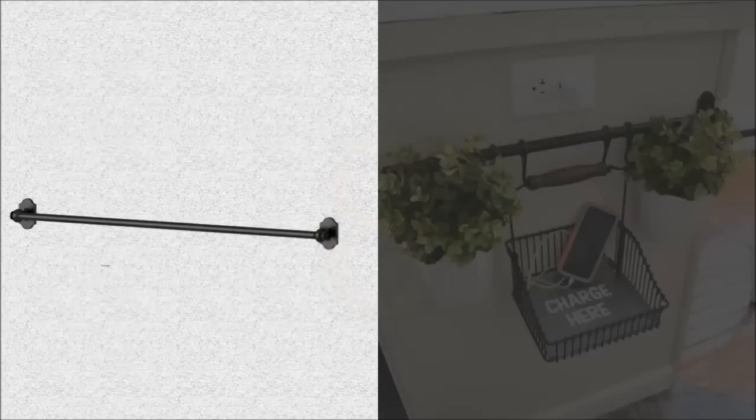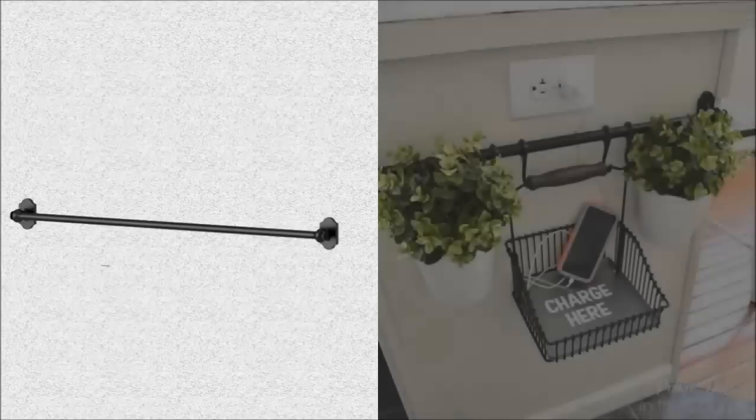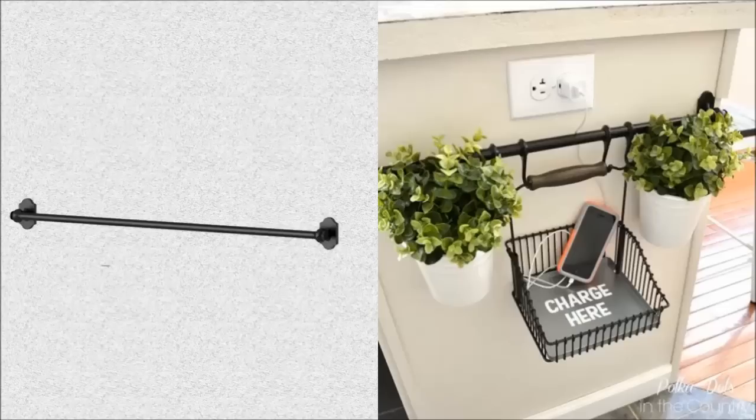Number 8. Hooks can be attached to this simple rail, which you can use to organize just about anything. To keep electronics from cluttering your counter, you can mount this bar near an outlet along with a basket to hold your gadgets.